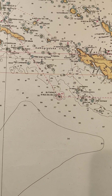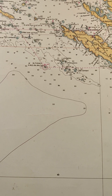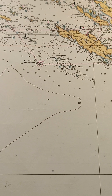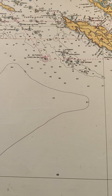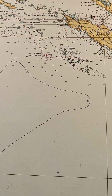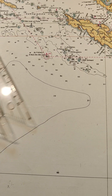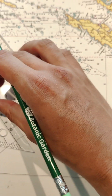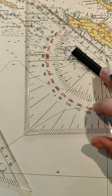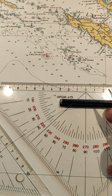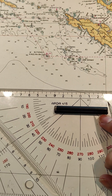They also vary in scale. Large-scale charts offer intricate details for confined areas like harbors, while small-scale charts cover vast expanses of the ocean.